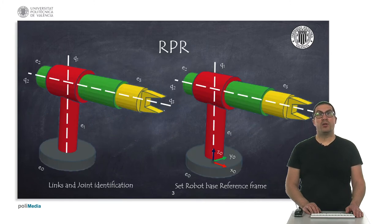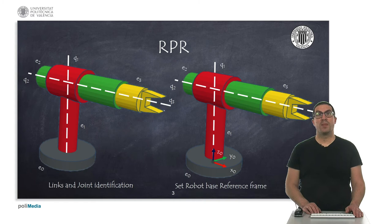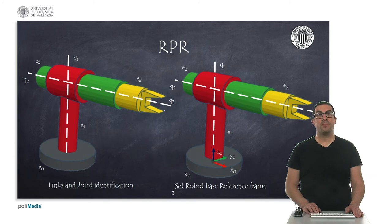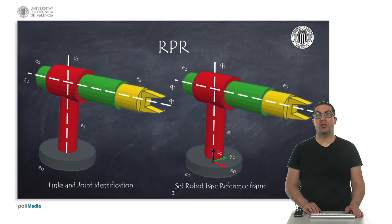The RPR robot has three joints: a first revolute joint, followed by a prismatic joint, and a third revolute joint. The first step is the identification of robot links and joints. In the figure on the left I have indicated the links numbered from E0 to E3 and the joint axes numbered from Q1 to Q3. Next, we must set the position and orientation of the reference frame associated with the robot base. The only requirement is that Z0 passes through joint 1. In our case we have positioned this frame at the bottom of the robot base link.